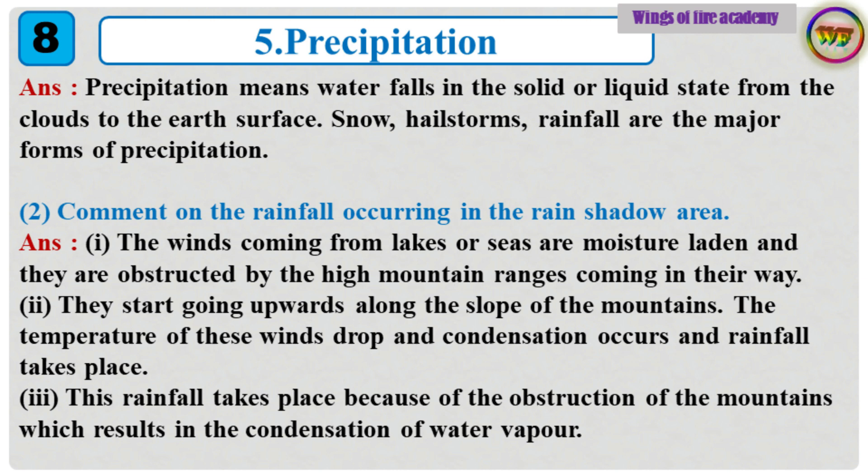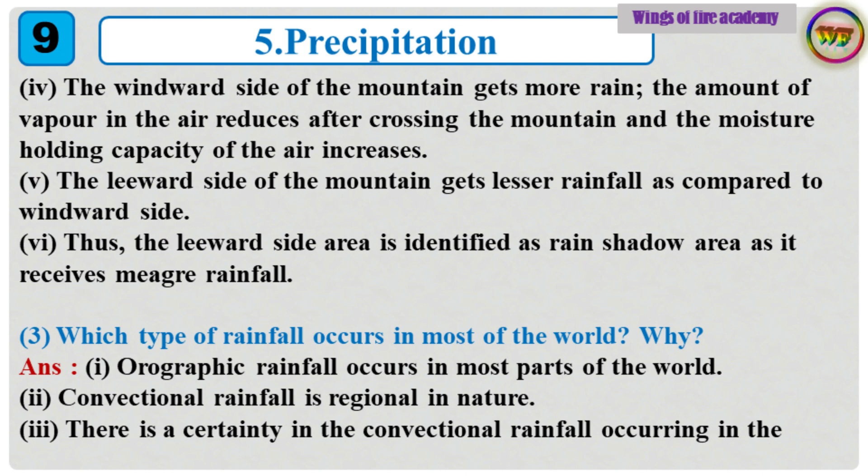2. Comment on the rainfall occurring in the rain shadow area. Answer: The winds coming from lakes or seas are moisture laden and they are obstructed by high mountain ranges. They start going upwards along the slope of the mountains. Temperature drops and condensation occurs and rainfall takes place on the windward side. The amount of vapor reduces after crossing the mountain, so the leeward side gets lesser rainfall. Thus, the leeward side area is identified as the rain shadow area as it receives meager rainfall.